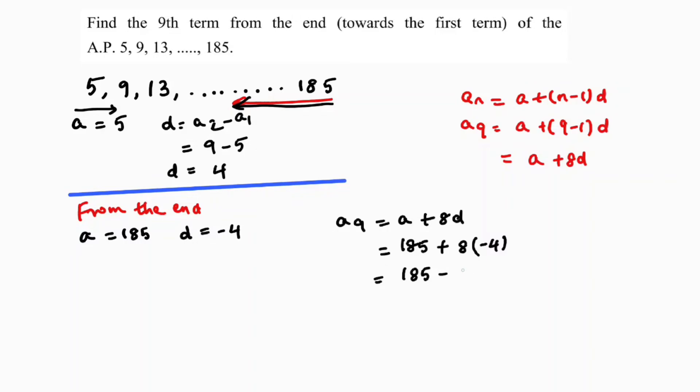185 minus 8 times 4, 32. So if we subtract, 5 minus 2, 3, 8 minus 3, 5, 153. So ninth term from the end is 153.